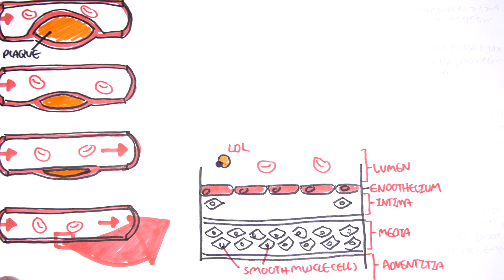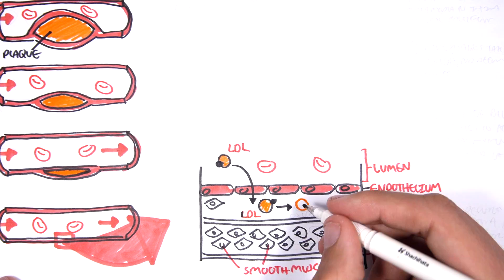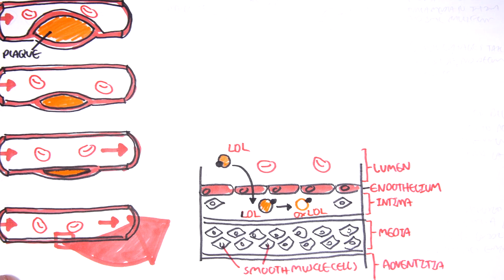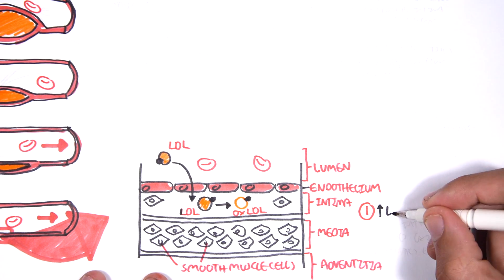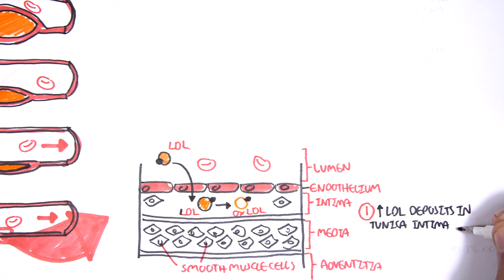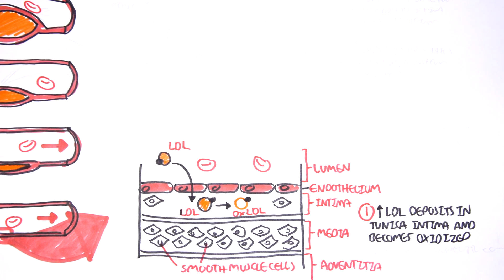There are a few theories of how atherosclerosis begins. One theory suggests that there is endothelial dysfunction when there is high amounts of circulating LDLs. Because there are high concentrations of low-density lipoproteins, these LDLs can deposit in the tunica intima and then become oxidized. Oxidized LDL activates endothelial cells causing the endothelial cells to express receptors for white blood cells on their surface.